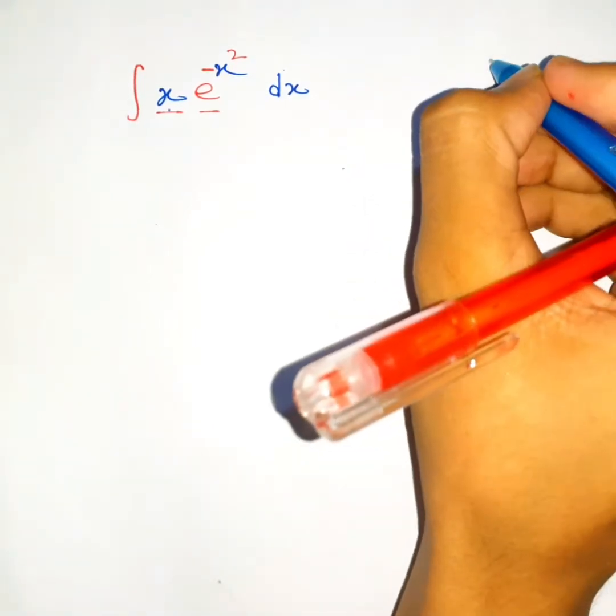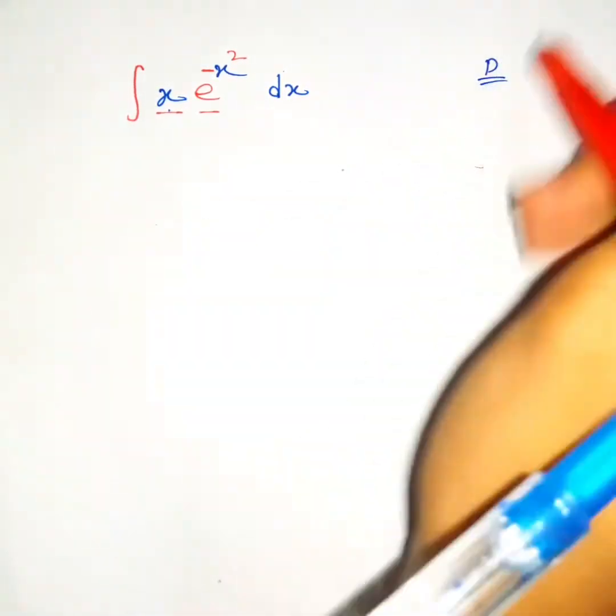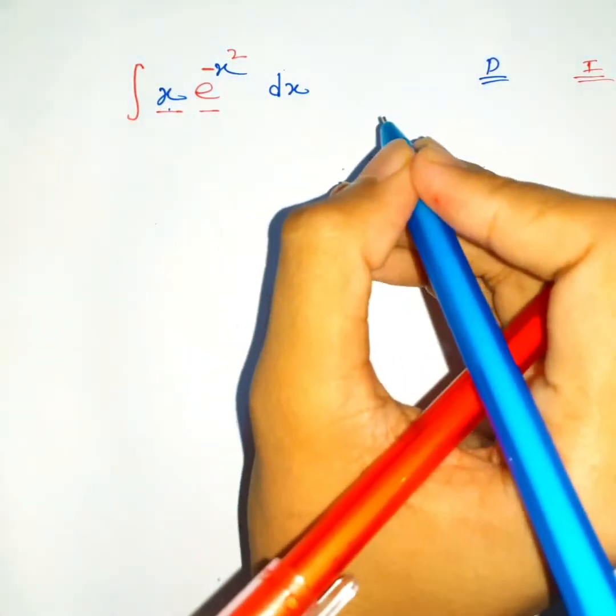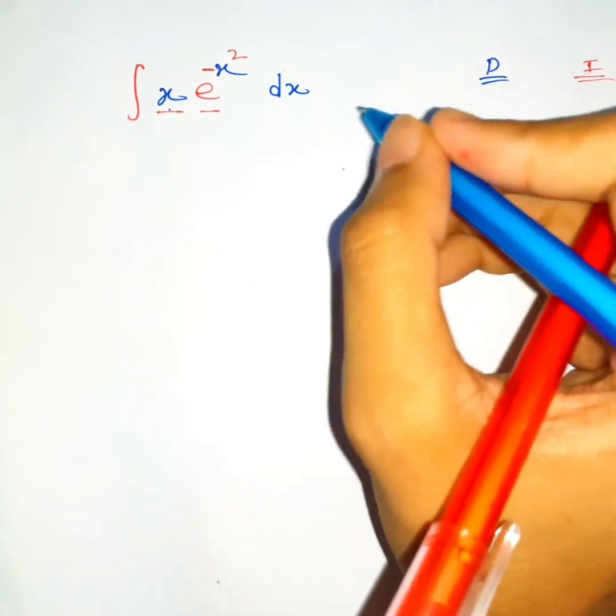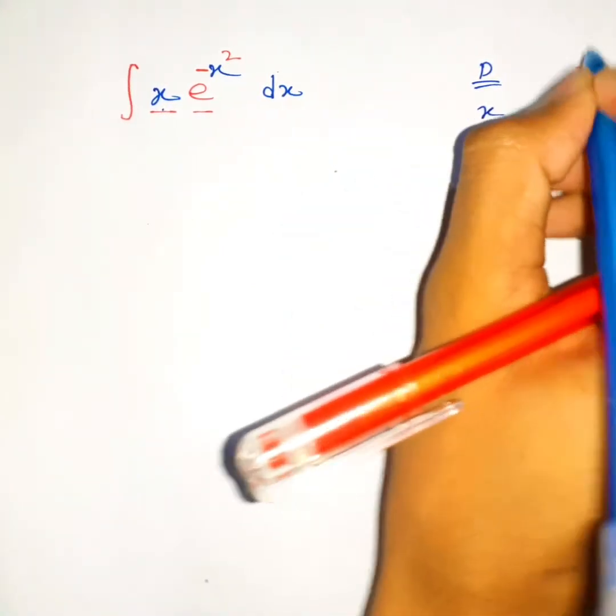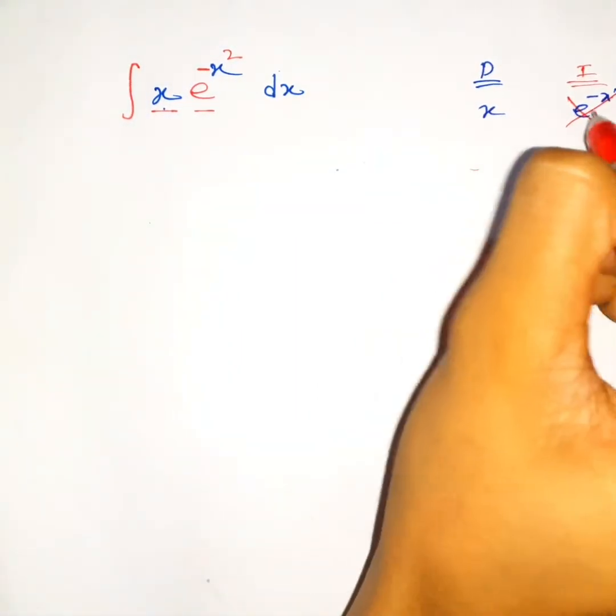Let's give it a try. So here is our setup for integration by parts. Let's say that we're going to differentiate x and integrate e to the negative x squared.